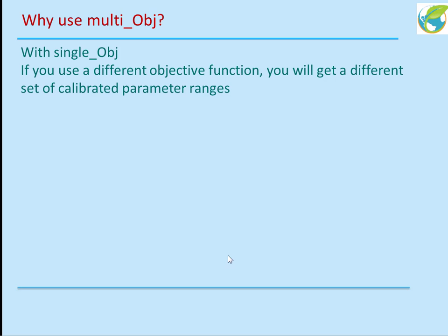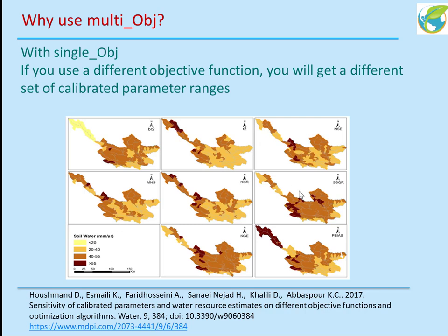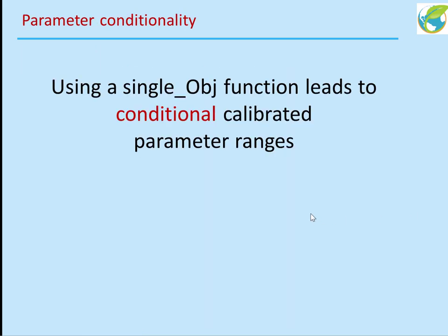Why should we use multiple objective functions? Because if you use different single objective functions, you will get different sets of calibrated parameter ranges. To give an example: using eight different objective functions and calibrating each one separately, we then plotted the water yield in millimeters per year for the whole watershed. There is a significant difference in water yield when you use different objective functions. If you plot soil moisture, again you see very different information from your calibrated model.